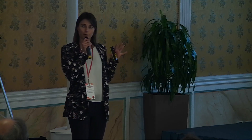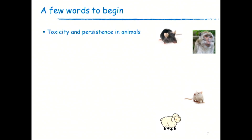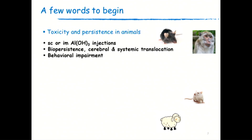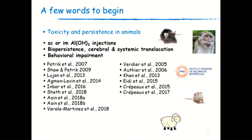That was for humans. What do we know from animal studies? This is really what I'm working on — I work with mice. From animal studies, we know that following subcutaneous or intramuscular injection with aluminum hydroxide or vaccines containing aluminum hydroxide, we can observe bio-persistence, systemic translocation or cerebral translocation, and this translocation is associated with behavioral impairment. This is not just one or two studies — it is about 15 studies from 14 years. Every year you can find another study showing the same translocation and the same behavioral impairment following exposure to aluminum hydroxide.